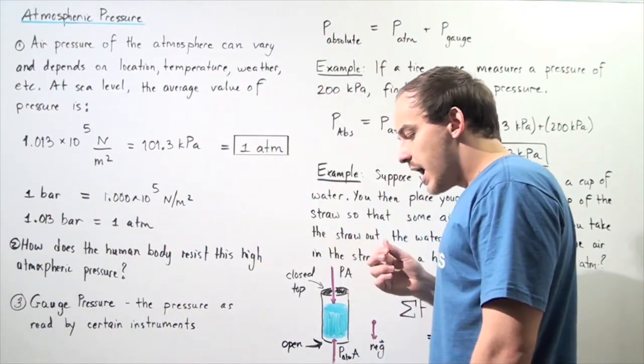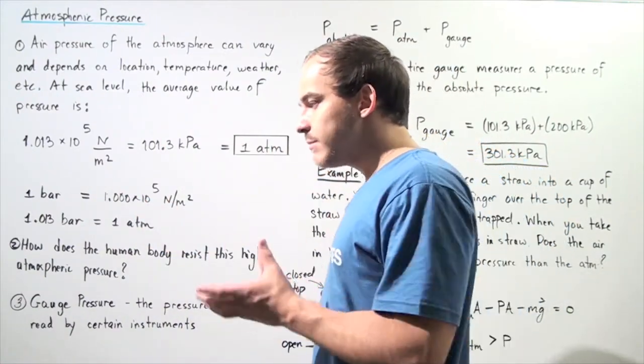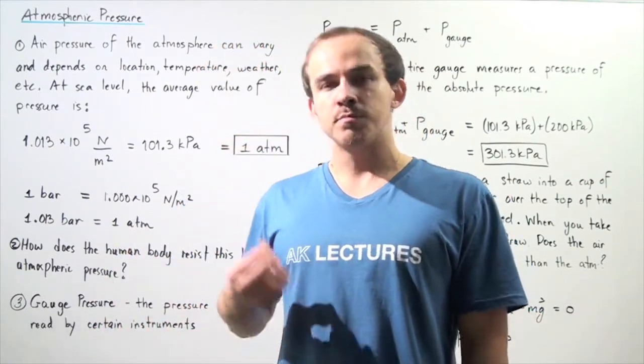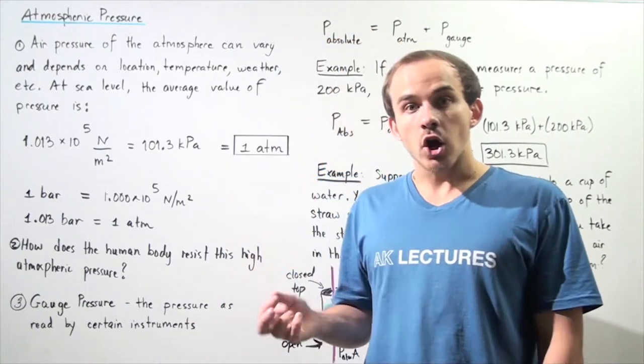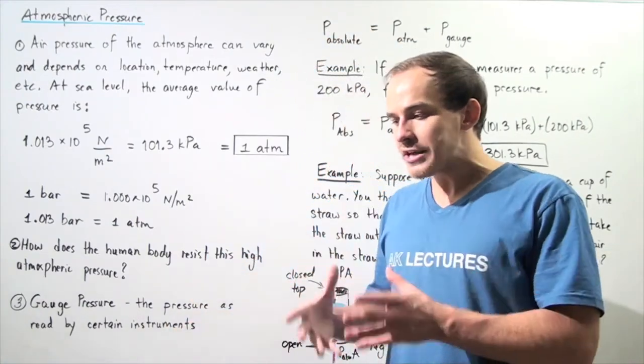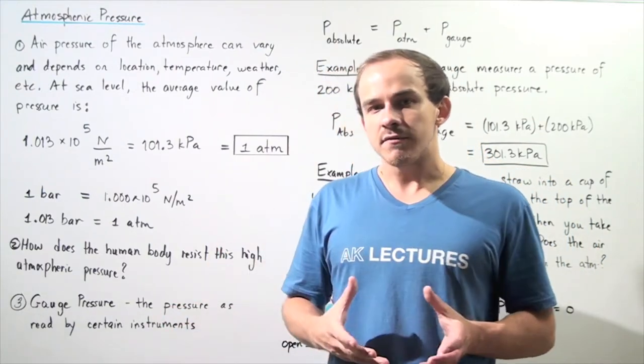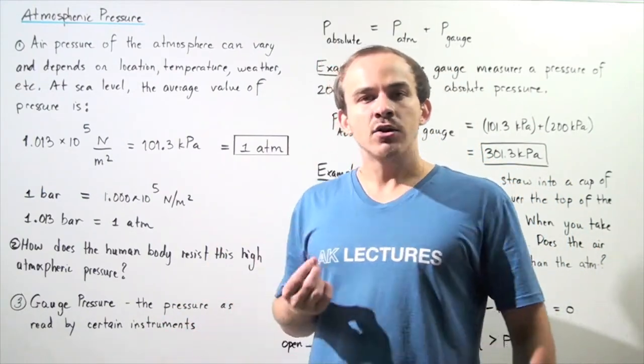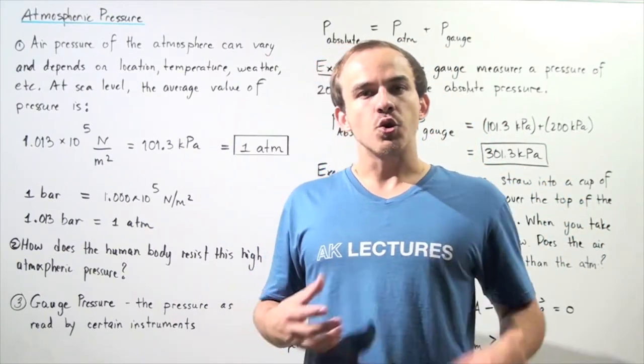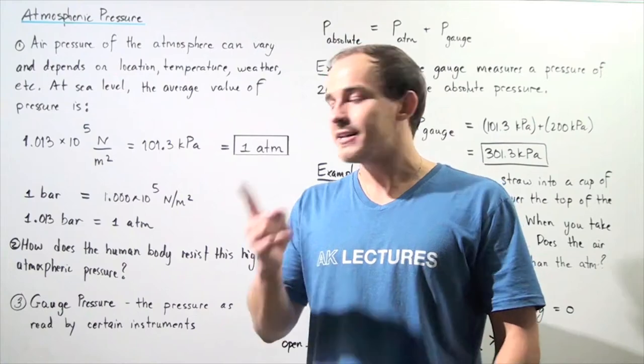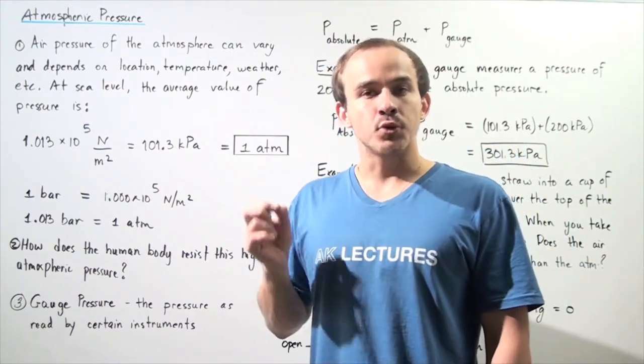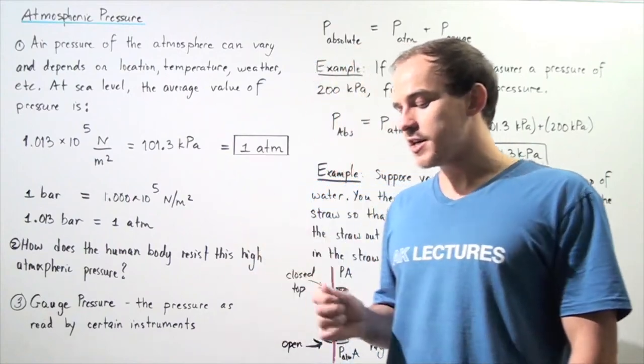We see that our atmosphere, the molecules in our atmosphere, are capable of creating this fluid pressure, which is pretty large at sea level. Now, the question is, if the pressure created by the atmosphere at sea level is so large, how could our bodies withstand this pressure? In other words, why aren't we squished? How does our human body resist this high atmospheric pressure?